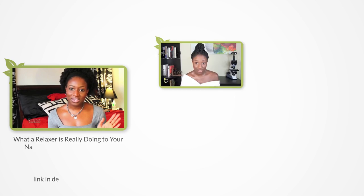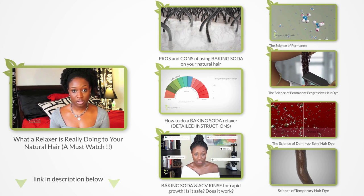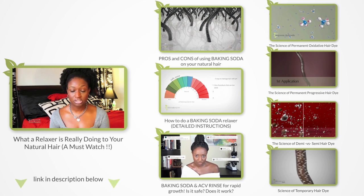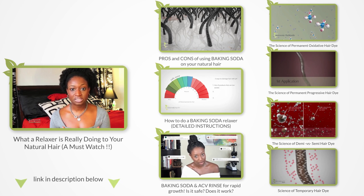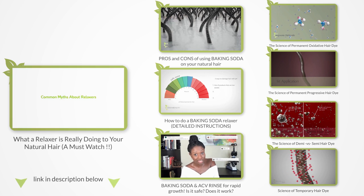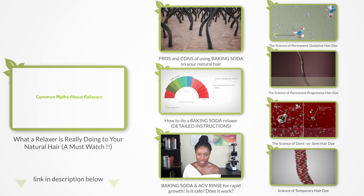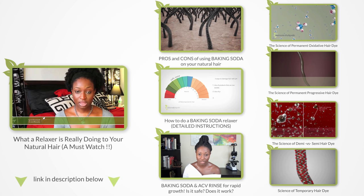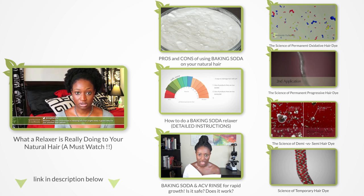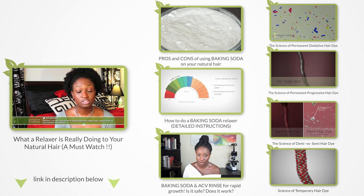Just like with your curl pattern, changing your hair texture can be done in two ways: either permanently by breaking the strong disulfide bonds in your hair with relaxers, baking soda, hair dyes, or heat damage, just to name a few — or temporarily through heat or heatless stretching.